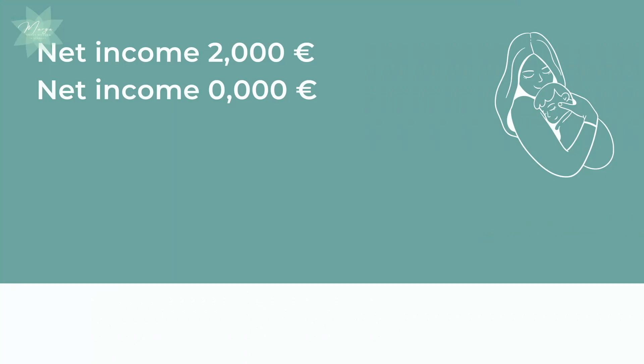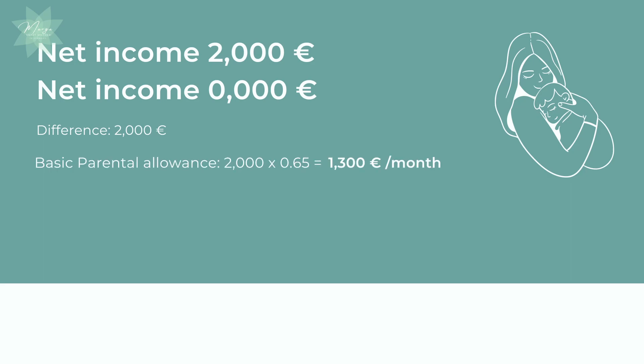Let me give you an example of how Parental Allowance Plus can be calculated. We have the same mother that was receiving 2,000 euros per month before the child was born and after the child's birth she is receiving zero. The difference is 2,000. The basic parental allowance, which is 65% of the difference, is 1,300 euros per month, as we've seen before. Half of this amount — also called the cap — is 650 euros. So this will be the amount for Parental Allowance Plus.